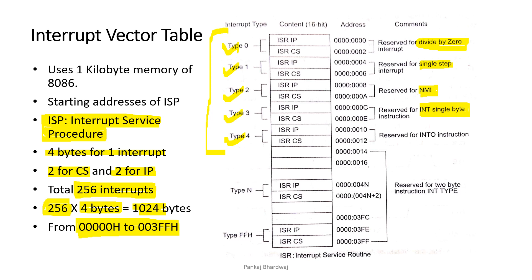Type 4 is the overflow interrupt. In signed arithmetic operations, if the result is too large to fit in the destination register, an overflow occurs, triggering the Type 4 interrupt. In total there are 256 software interrupts — from Type 00 to Type FF. These five (Type 0 to Type 4) are predefined. The remaining 251 interrupts can be configured by the programmer, giving a total of 256 software interrupt types.